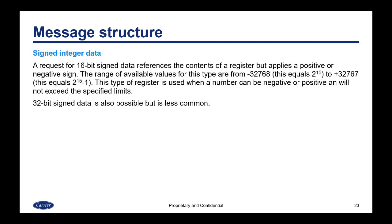A request for 16-bit signed data references the contents of a register but applies a positive or negative sign. The range of available values is from negative 32,768 (which equals 2 to the power of 15) to positive 32,767 (which equals 2 to the power of 15 minus 1). This type of register is used when a number can be negative or positive and will not exceed the specified limits. It's also possible to create 32-bit signed data, though it is less common. You would use signed data whenever the value in the register could be negative.